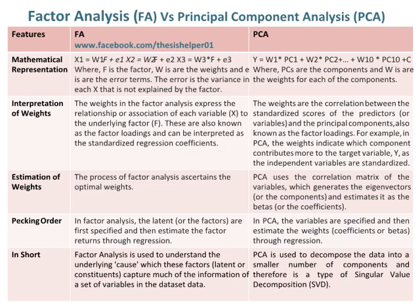For example, in PCA, the weights indicate which component contributes more to the target variable Y, as the independent variables are standardized. The process of Factor Analysis ascertains the optimal weights. Whereas PCA uses the correlation matrix of the variables, which generates the eigenvectors, or the components, and estimates them as the betas, or the coefficients.